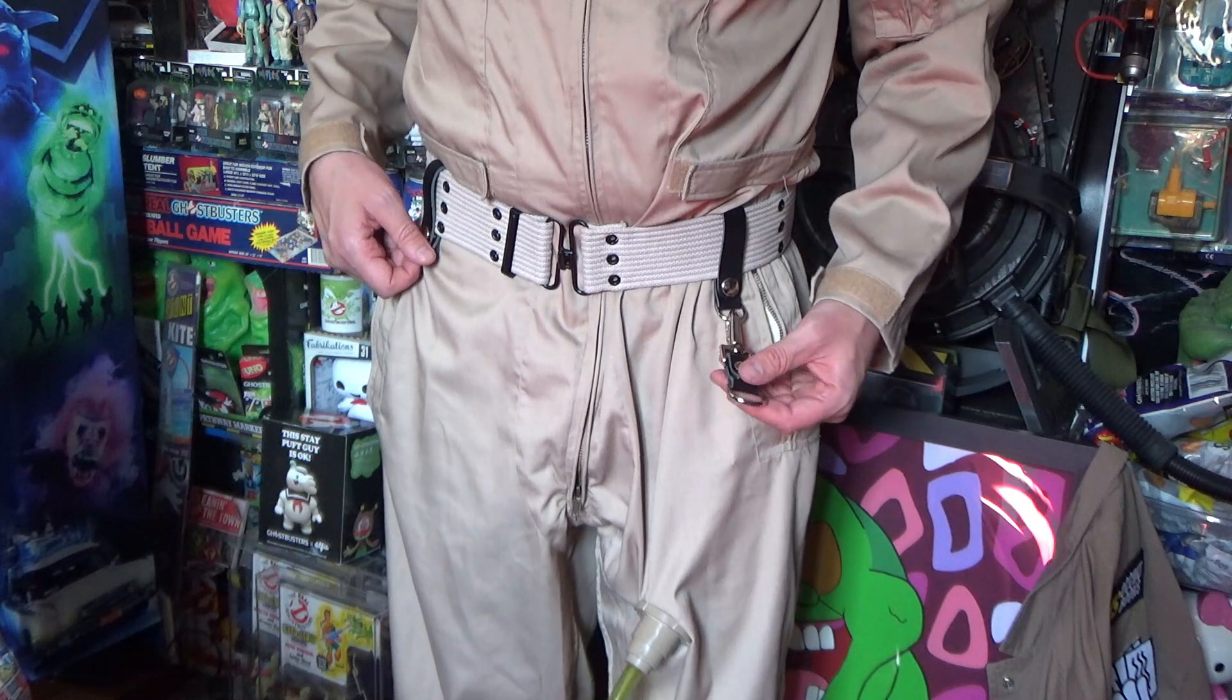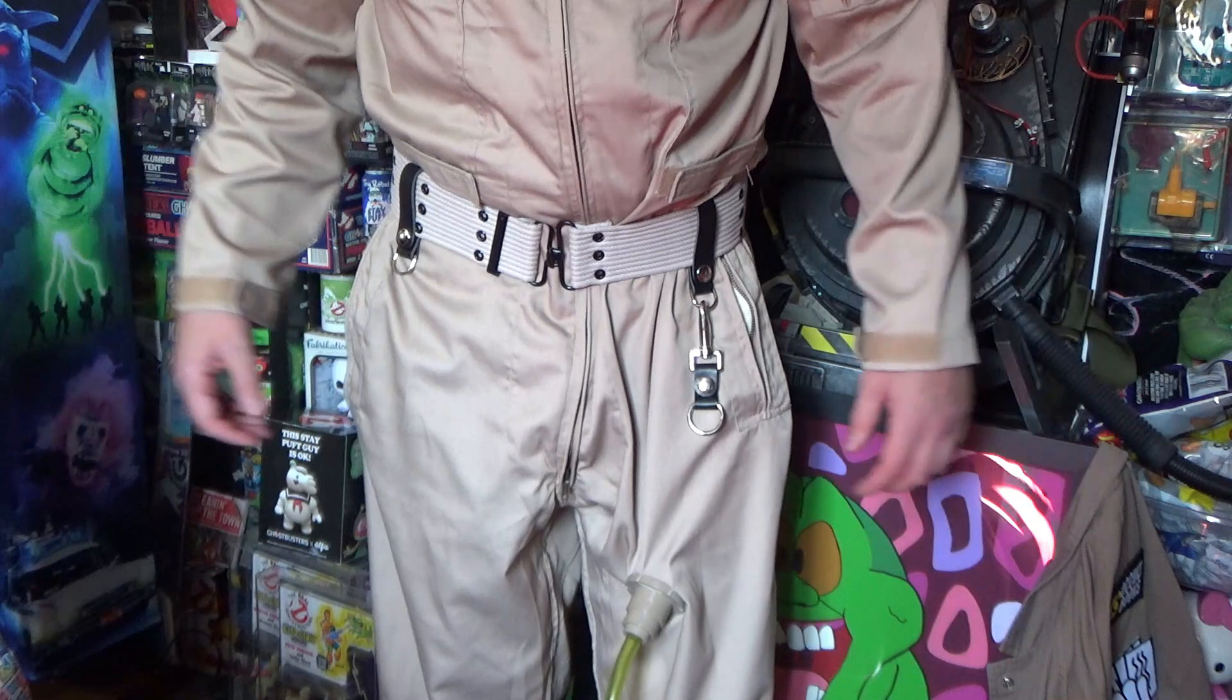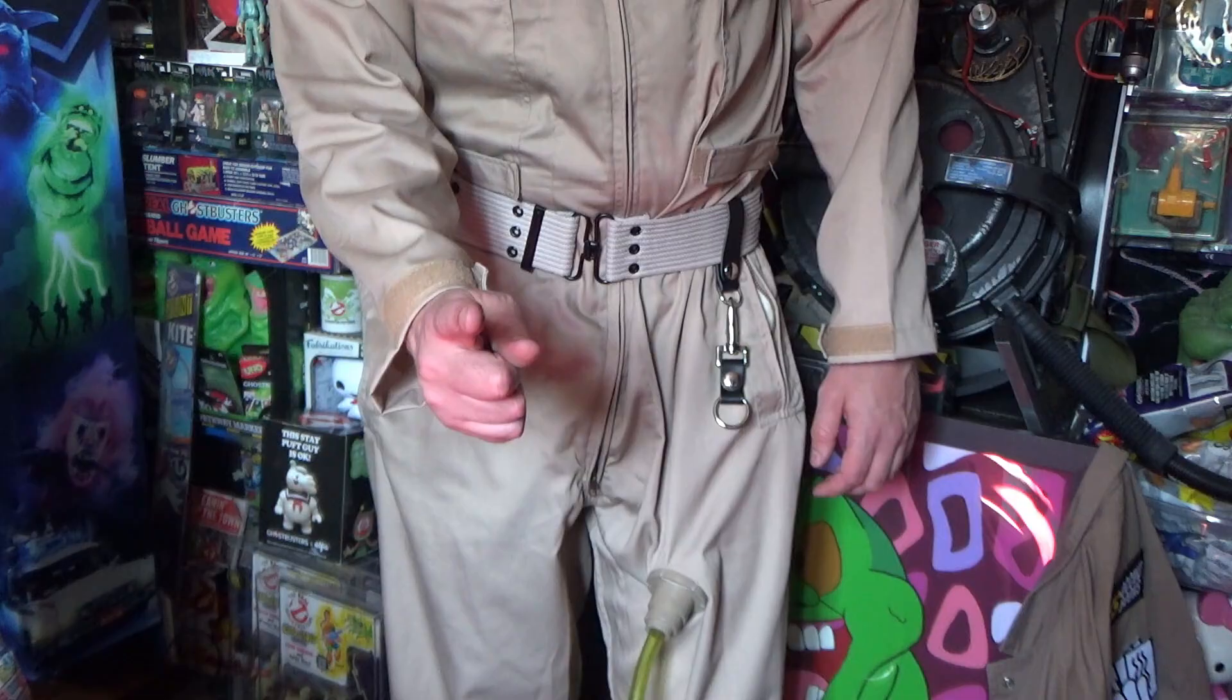In case you're wondering, these belt fobs are from Doray Egon who is on eBay. I highly recommend those as well. But yeah, that is the Magnoli stuff. Let me know what you think, and I look forward to seeing you in the next video. Until then, keep on busting!